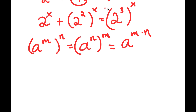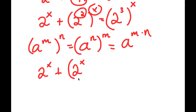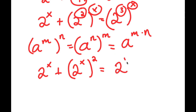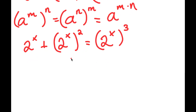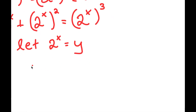So right here, we have 2 to the power of 2 to the power of x, and I can switch the x and 2. So this is the same thing as 2 to the power of x to the power of 2. And 2 to the power of 3 to the power of x — I can switch x and 3 — so this equals 2 to the power of x to the power of 3. Now I'm going to let 2 to the power of x equal y.